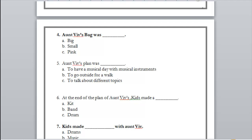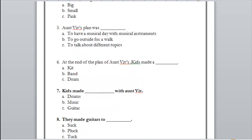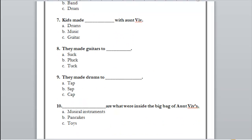They had drums to tap and guitar to strum, so they made a band. Now let's get to number seven: kids made drums, music, or guitar? Yes, exactly — they made music. Number eight: they made guitars to suck, pluck, or tuck? Pluck — they made guitars to pluck, which is the action of pulling the string of the guitar to make a sound.